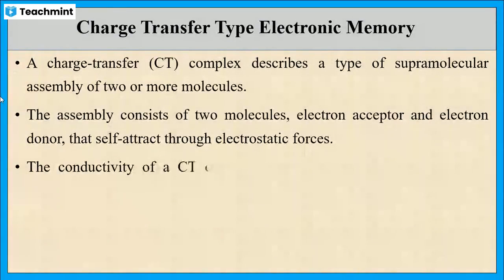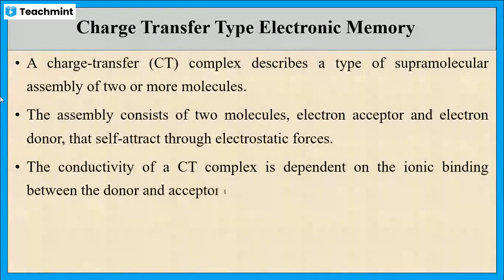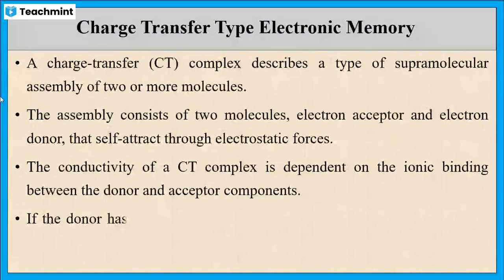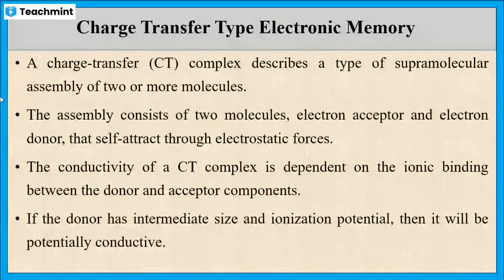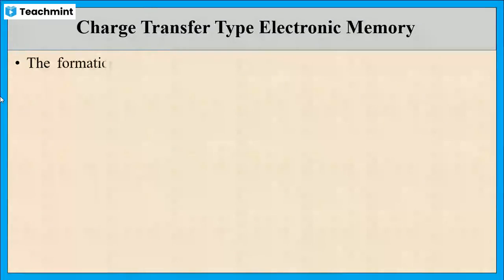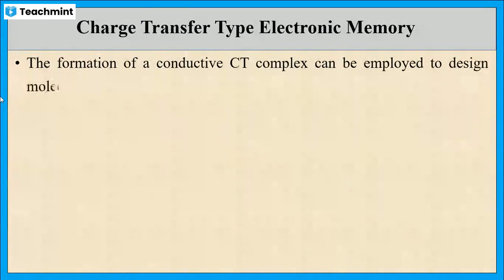Usually, the conductivity of charge transfer complex is dependent on the ionic binding between the donor and acceptor components. If the donor has intermediate size and ionization potential, then it will exhibit conducting property. Such type of conducting charge transfer complex can be employed for constructing electronic memory devices.